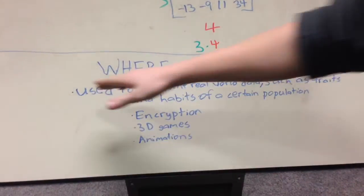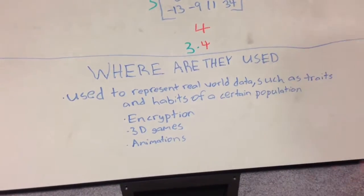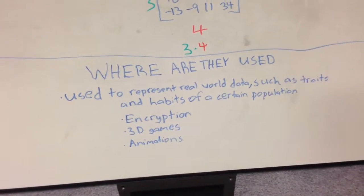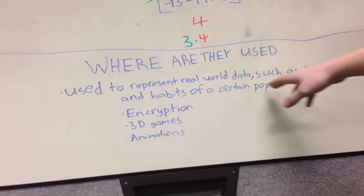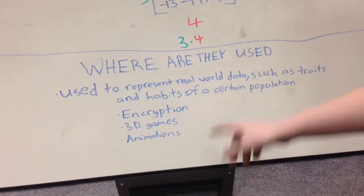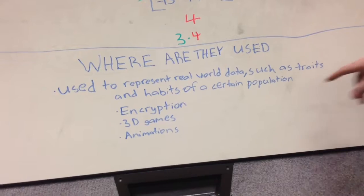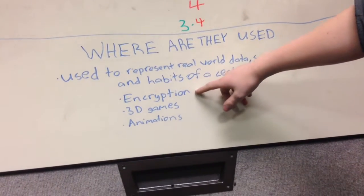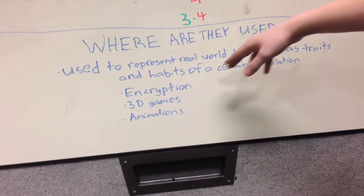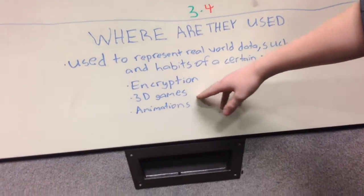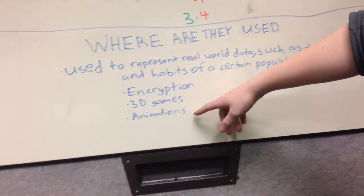Now you may be wondering, where are matrices used in the real world? Matrices can be used to represent real world data, such as traits and habits of certain populations. They're also very common in making encryptions. They can also be used in computers and other technologies, such as 3D games and animations.